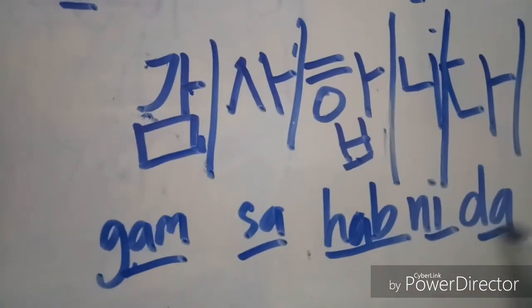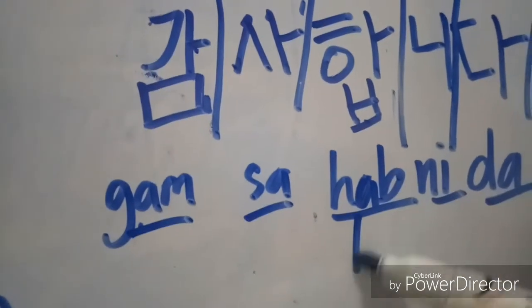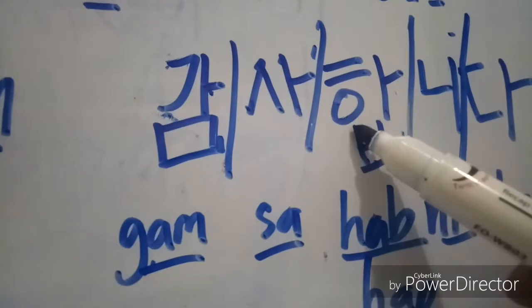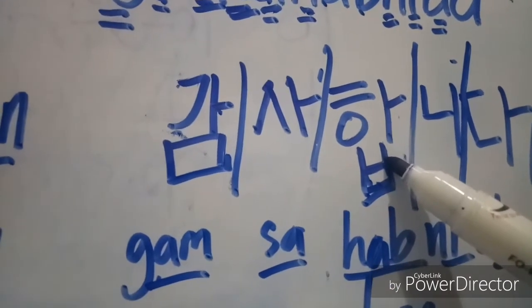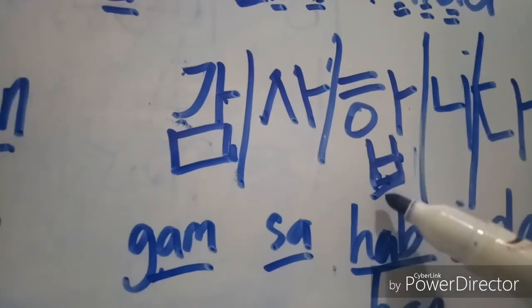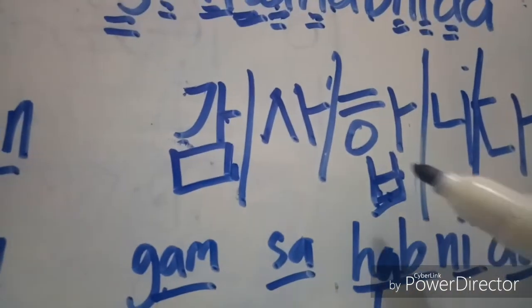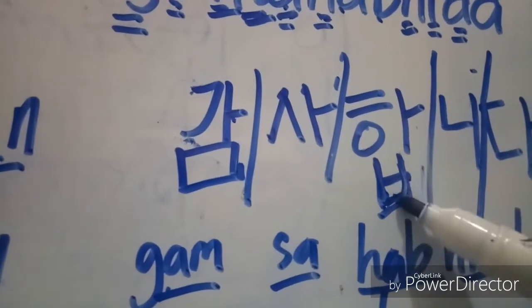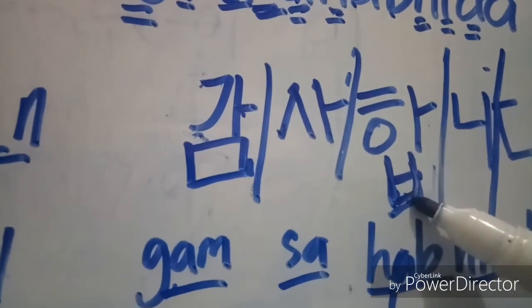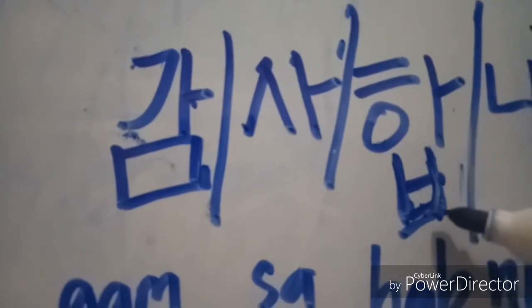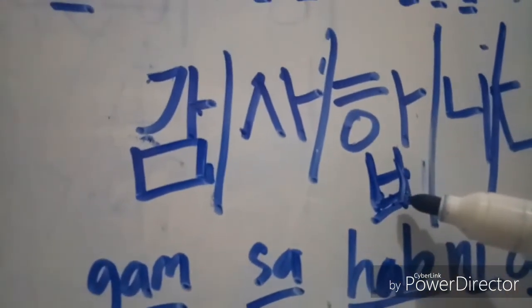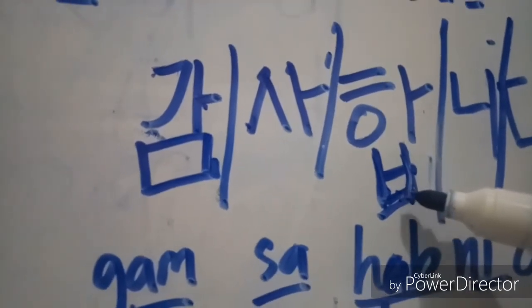Letter B would sound like 'P' — it would sound like 'HAP' — because this letter B is a final consonant. If you use it as a final consonant, the sound changes to a P sound. That is a rule of the Korean language — whenever you use this letter B at the bottom, the sound of this would change. Instead of 'HAB' it would be 'HAP'.